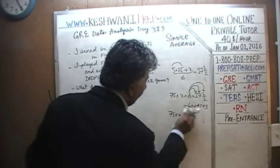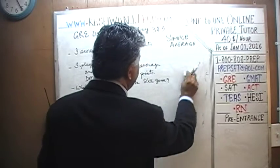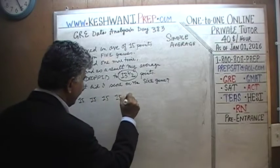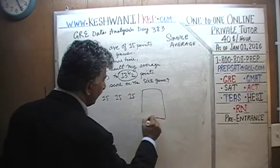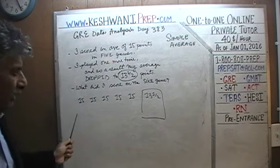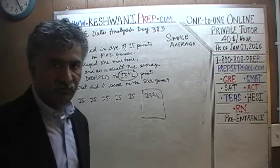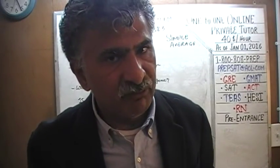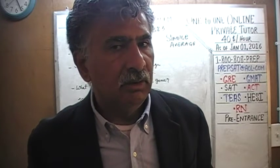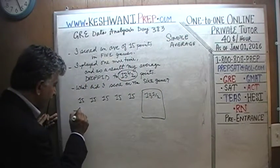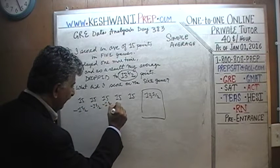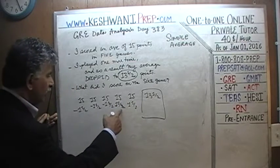Same setup: five games, each with a score of 15, so the average is 15. Now I played one more game. Let's pretend I scored 13 and a half in that last game. Since the new average is 13 and a half, I have to take away one and a half from each of the five previous games — one and a half from game 1, game 2, game 3, game 4, and game 5.